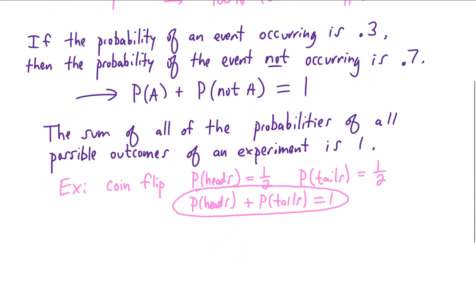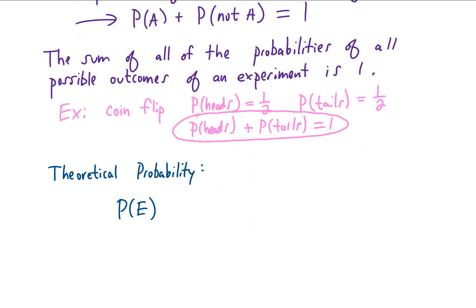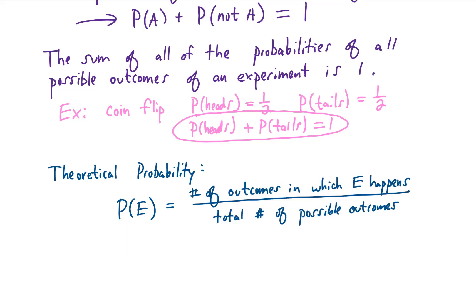So what we just calculated there was actually our first theoretical probability. Theoretical probability can also be called classical probability. Typically we think of it as a mathematical probability that something is going to happen. We write the theoretical probability of an event called E as P(E), and we can calculate it using this formula: it is the number of outcomes in which this event E happens divided by the total number of possible outcomes.